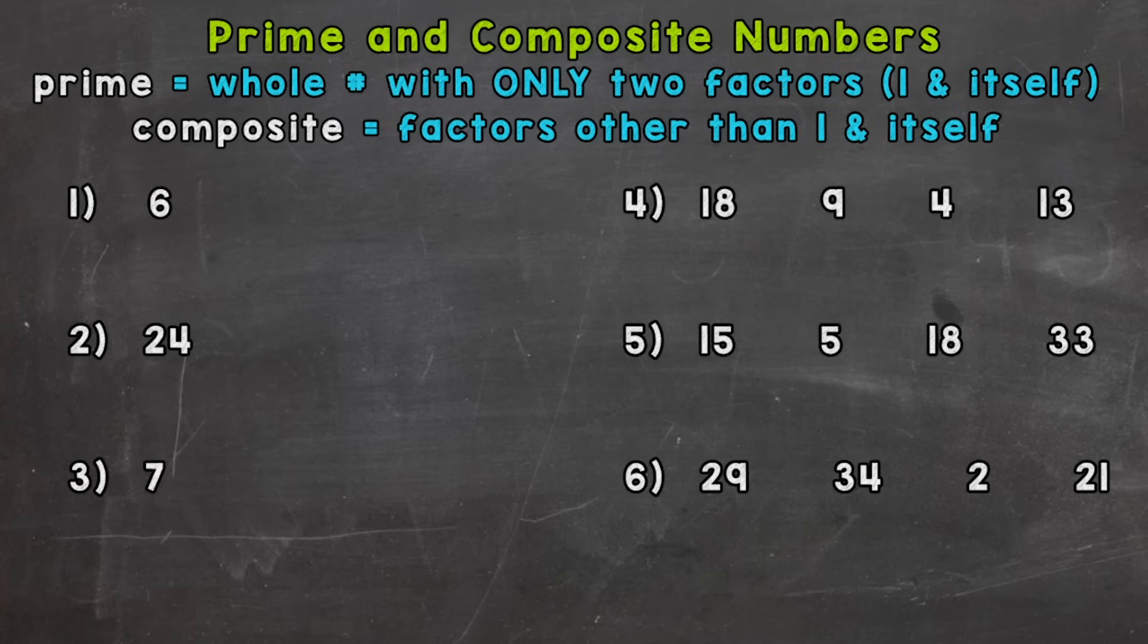Up top, we have the definitions of each. And then below at the bottom, we have six different examples or problems that we're going to go through together in order to get this down.